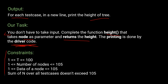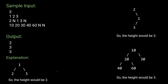The constraints are: the number of test cases T is between 1 and 100, the number of nodes is between 1 and 10^5, and the data of each node is also between 1 and 10^5.